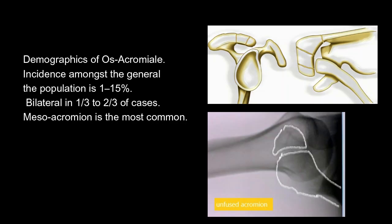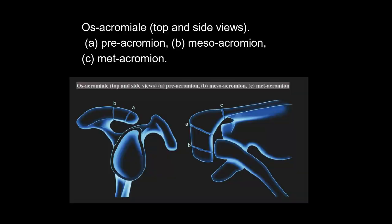Demographics of os acromiale: incidence amongst the general population is 1 to 15 percent, bilateral in one-third to two-thirds of cases. Mesoacromion is the most common type. Top and side views show the three types: pre-acromion, mesoacromion, and metacromion.